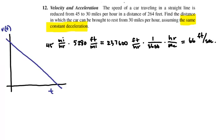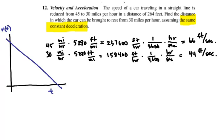And we could do the same thing with the 30. And so there, 30 miles per hour times 5280 feet per mile gives 158,400 feet per hour. And that all yields 44 feet per second.